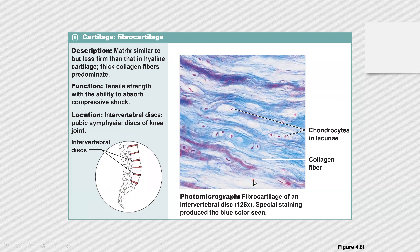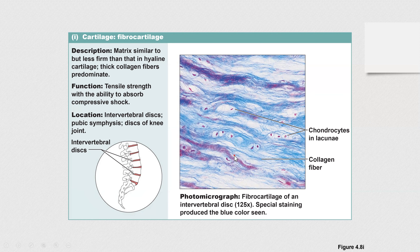Fibrocartilage also has limited distribution in the body. The matrix is similar but less firm than that in hyaline cartilage. Thick collagen fibers are predominant, and the matrix is more flexible compared with hyaline cartilage. Function: tensile strength with the ability to absorb compressive shock. Location: intervertebral discs between the vertebrae, pubic symphysis connecting the two hip bones on the anterior side, and discs of the knee joint. Chondrocytes are inside lacunae with collagen fibers.